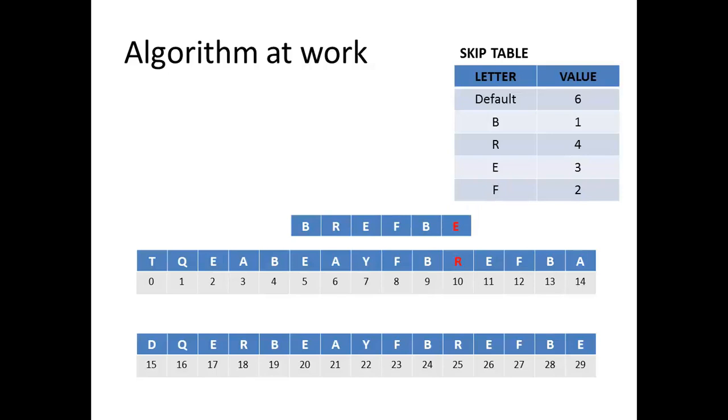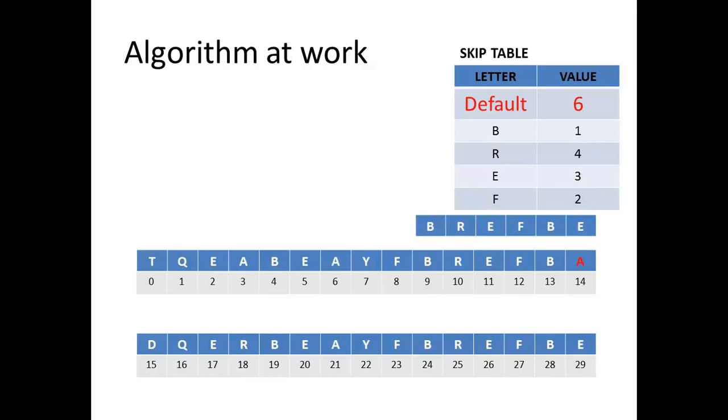We compare E with R, get a mismatch, the value in the skip table for R is 4, so we move along by 4. Again, align the two R's. E and A give a mismatch, but in this case A does not appear in the pattern at all. So we will move by a distance equal to the size of the pattern. That is 6.